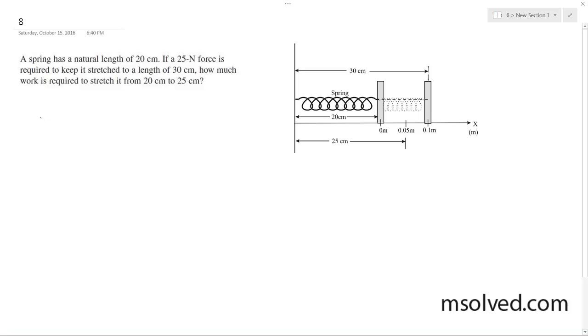First we need to find our constant k. So F(x) is equal to kx. k is equal to 0.1. The reason why is because we're using our resting point of 0 meters where it's stretched out 20, its natural length, and we go all the way to 30 centimeters, which is 0.1 meters, 10 centimeters. So this is equal to 25, and we divide through. k is equal to 250, and F(x) is equal to 250x.